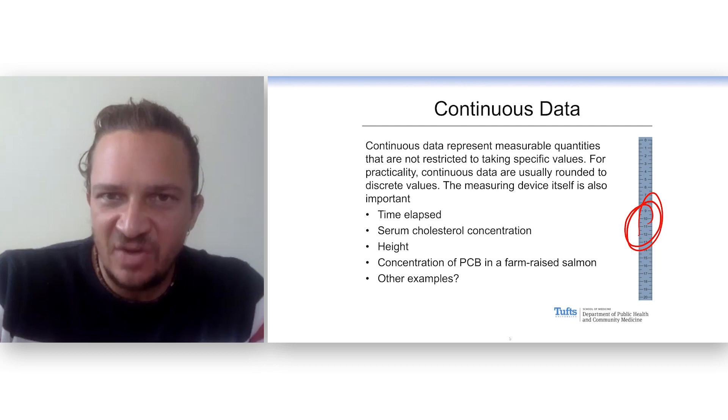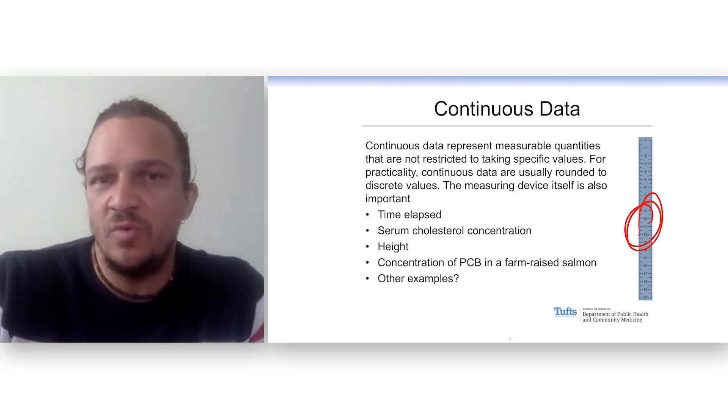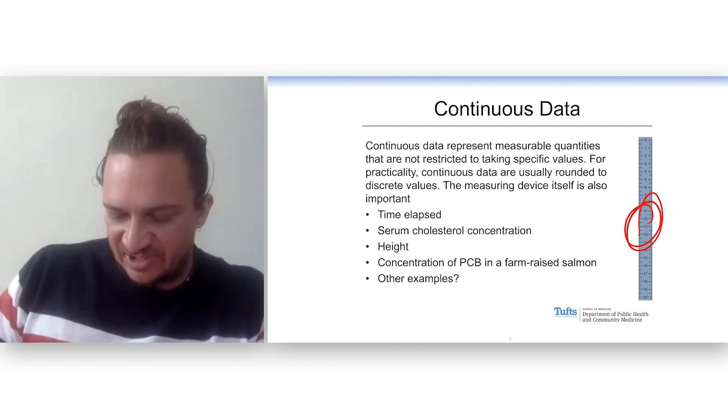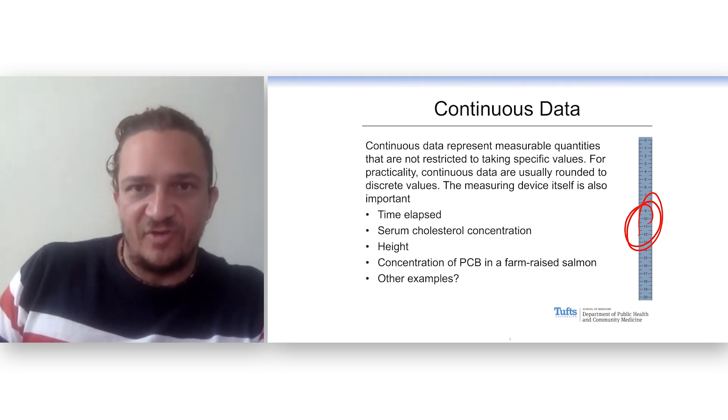So we're going to think that continuous data and the discrete data that we just had are richer because we can do math on them. And that allows us, again, to make comparisons and to find differences between treatments or groups or so on.